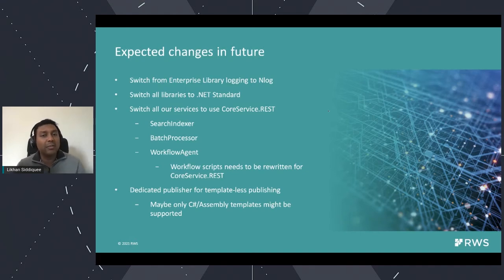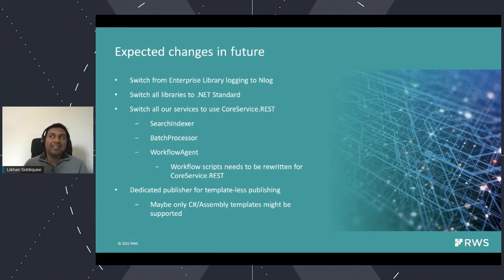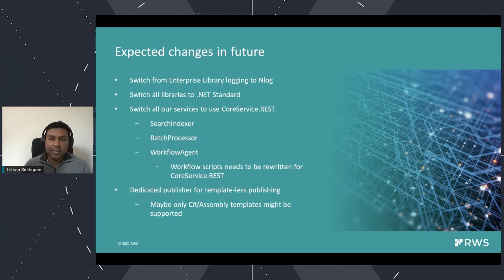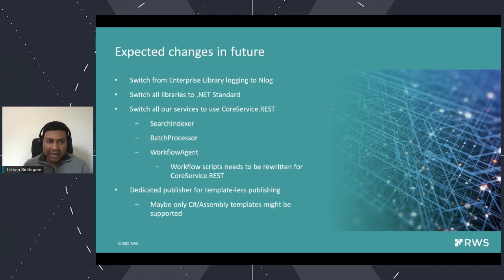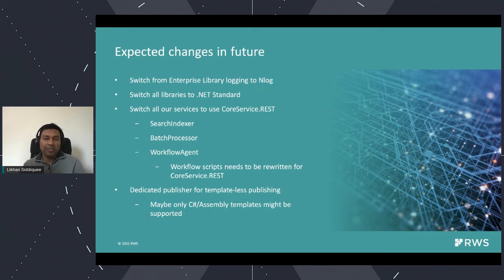What are the things that are still needed? One big thing is that a lot of you have been using Tridion for a long time and will know how to configure logging, which was based on Enterprise Library logging. We are switching to NLog for that, and that's already going to be available in the next release. We are switching to NLog to ensure this is not a blocker. All of the libraries are going to be slowly moving to .NET Standard. That's something in progress — we cannot say exactly when all of these will be done, but it will be a rolling change and we will continue moving all our libraries to .NET Standard.